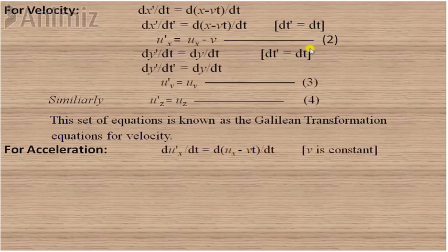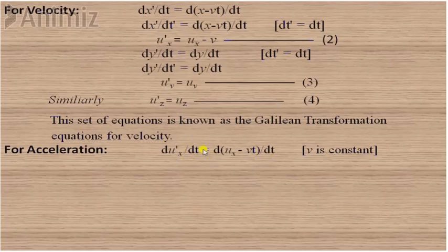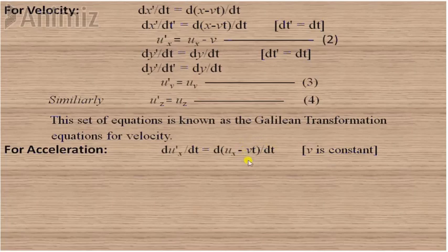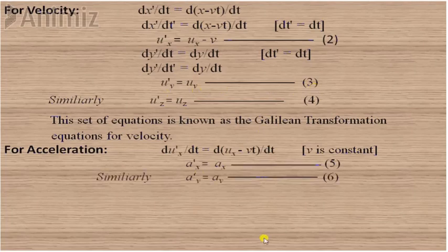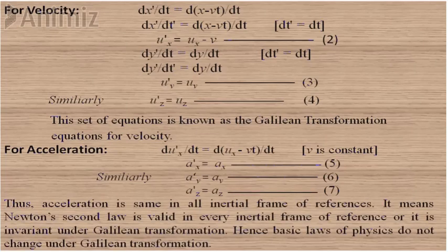Similarly for acceleration, we differentiate the velocity equations with respect to time. Differentiating u_x' with respect to t, and replacing dt with dt', we get acceleration along x-axis: a_x' equals d(u_x minus v)/dt. Since v is constant, its differentiation is zero, so a_x' equals a_x. Similarly, differentiating the third and fourth equations gives a_y' equals a_y and a_z' equals a_z. So acceleration is the same in both frames — acceleration is invariant under Galilean transformation.